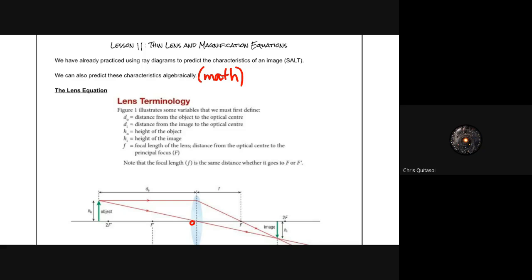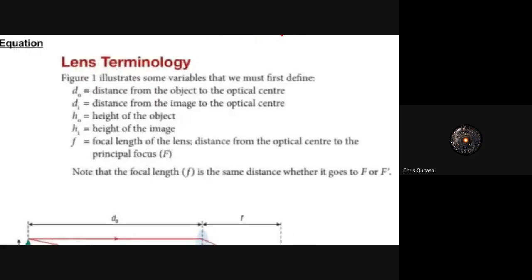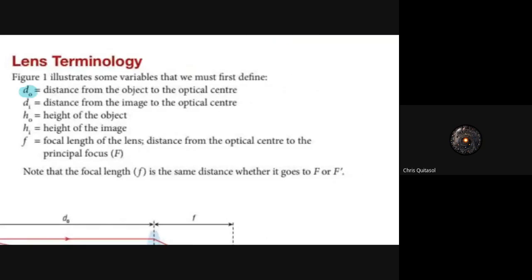When looking at what the thin lens equation is, we've already practiced determining the location and characteristics of an image using the SALT method, but we can also predict these characteristics algebraically using the thin lens equation. There are some terminologies to go over first. d₀ is the distance of the object, and dᵢ is the distance of the image — both measured from the optical center. If you're unsure what optical center means, go back to your original notes on lenses and mirrors.